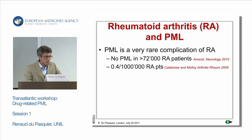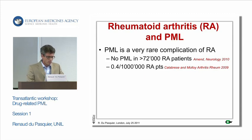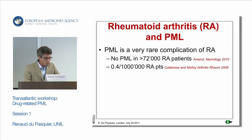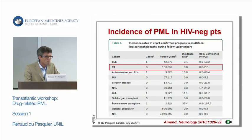Rheumatoid arthritis is an autoimmune disease in which PML is a very rare complication. In the Amand study, there were no PML cases in 72,000 patients with rheumatoid arthritis. In the Calabrese paper, the incidence was only 0.4 out of 100,000 patients. The table of all autoimmune diseases reported by Amand in a recent paper in Neurology showed no cases of PML in rheumatoid arthritis patients, and also no cases of PML in MS patients.